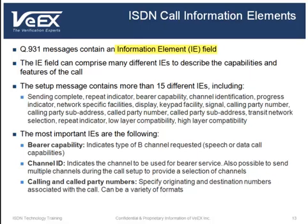Q931 messages also contain an information element field, which can comprise many different IEs that describe the capabilities and features of a call. The setup message alone contains more than 15 different IEs. The most important IEs, however, are bearer capability, channel identification, and the called and calling party numbers. The bearer capability IE indicates the type of B-channel requested, showing what services the call is capable of providing. The channel identification IE indicates which channel will be used for bearer service. During call setup, it is also possible to send multiple channels to provide a selection. The called and calling party number IEs specify the originating and destination numbers associated with the call, and can have a variety of formats.